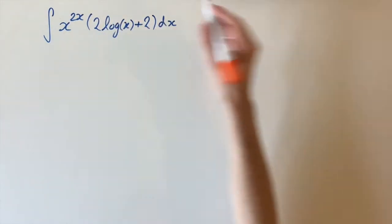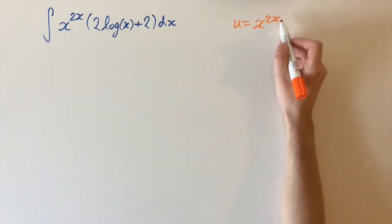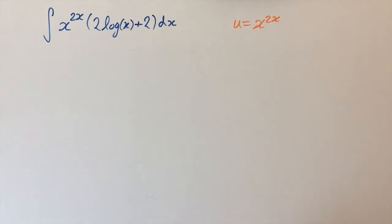Let's try a substitution of u equals x to the power of 2x. We want to get rid of this term, and to do this we need to be able to differentiate it.